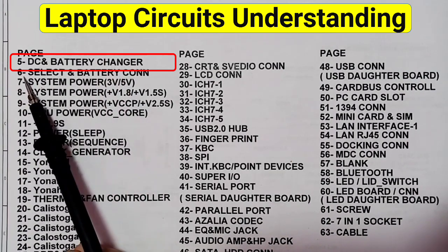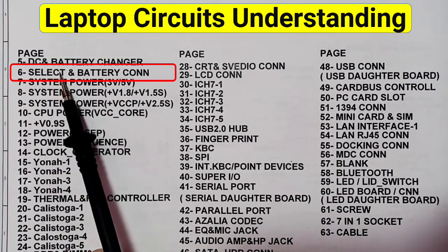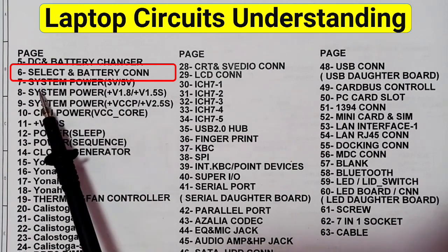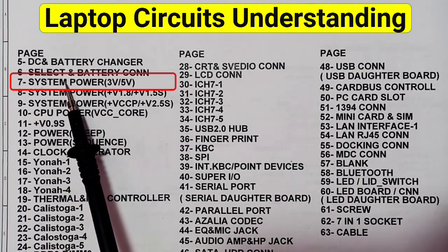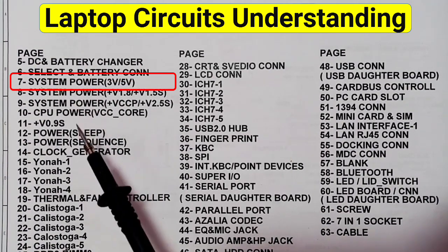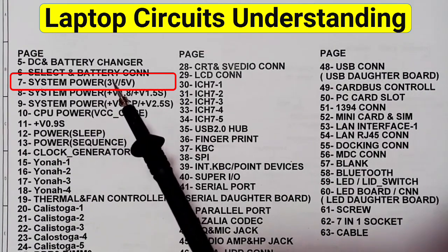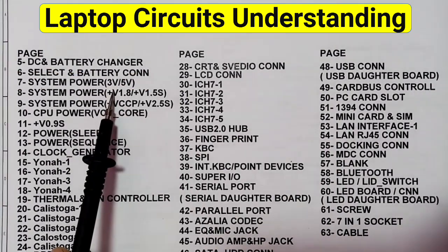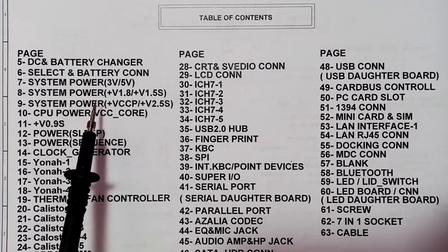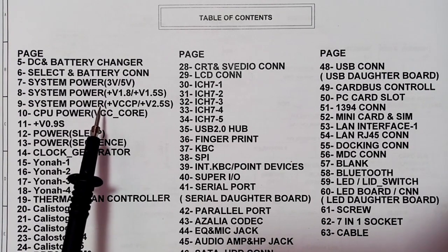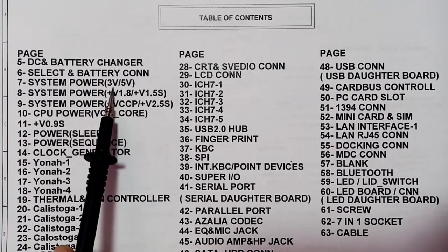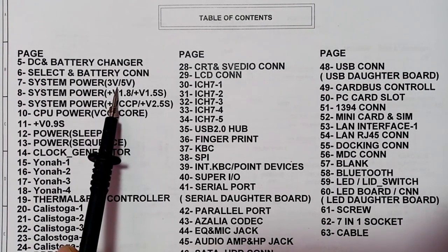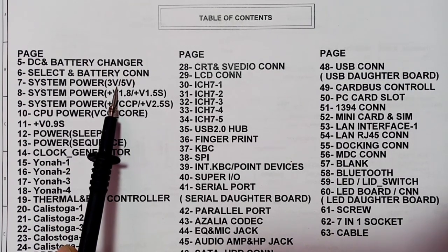In page 6 we have the select and battery connector, and the system power 3 volt and 5 volt. In page 7, these 3 volt and 5 volt are two main voltages in every motherboard — they should be present as soon as you plug in the charger, without powering on the motherboard.